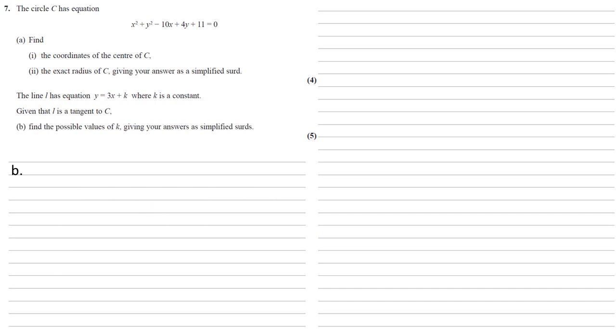The line L has equation y equals 3x plus k, where k is a constant. Given that L is a tangent to C, we need to find the possible values of k, giving our answers as simplified surds.